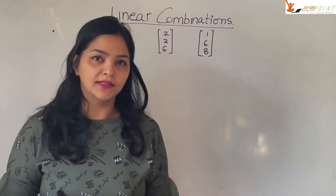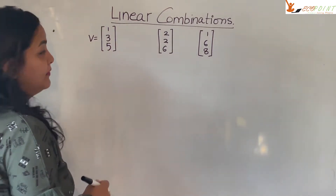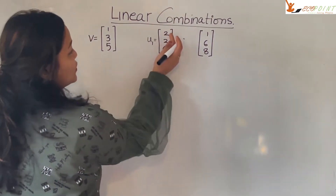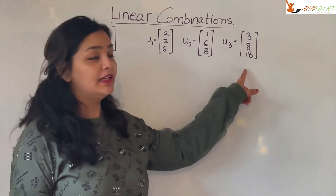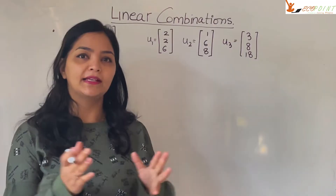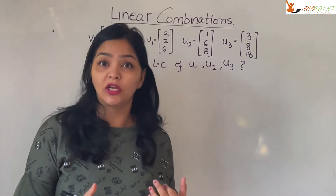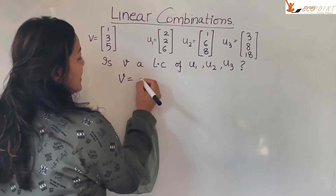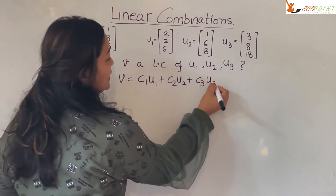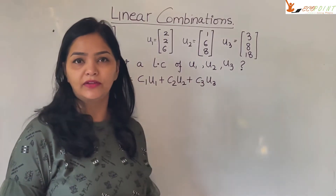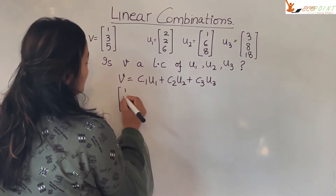Where u1 is [-4, 1, 0] and u2 is [-3, 0, 1]. Now the real question you must be able to answer is: suppose v is [1, 3, 5], u1 is [2, 2, 6], u2 is [1, 6, 8], and u3 is [3, 8, 18] — can v be represented as a linear combination of u1, u2, u3? You need to check whether v can be written as c1·u1 + c2·u2 + c3·u3 for any real numbers c1, c2, c3.